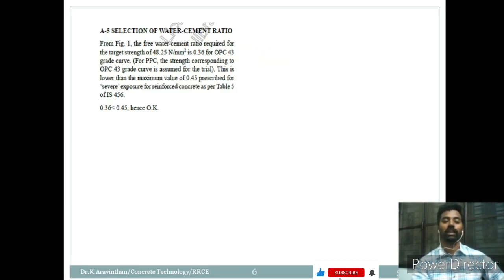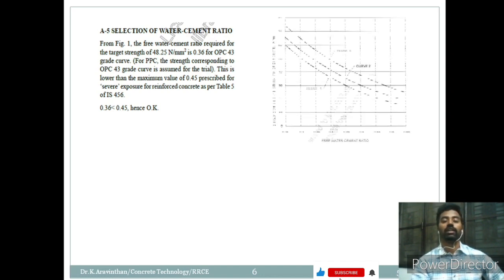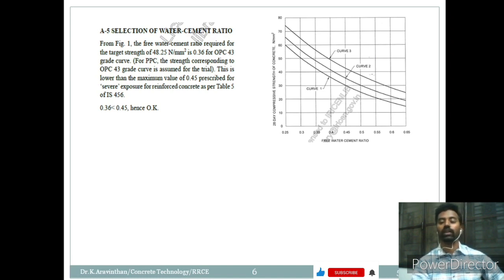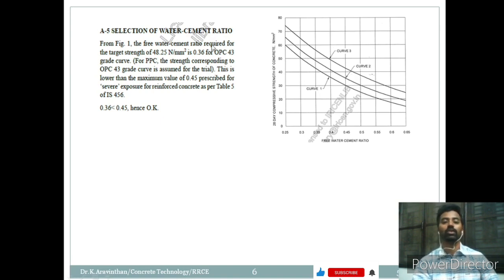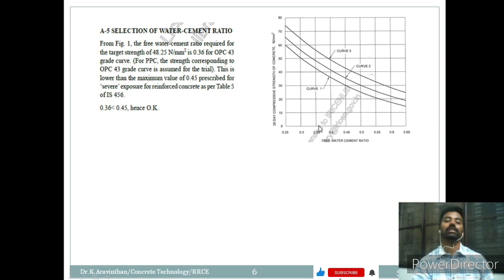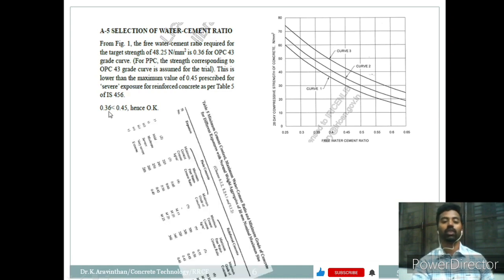Next is water. The amount of water required for the mix design is identified using Figure 1 of IS 10262. There are 3 curves used for 33 grade, 43 grade, and 53 grade OPC cement. If you are using Portland Pozzolano Cement (PPC) or Portland Slag Cement (PSC), you can use curve 2 as suggested by Indian Standards. We are using PPC cement and our target strength is 48.25 N/mm², giving us a water-cement ratio of nearly 0.36.